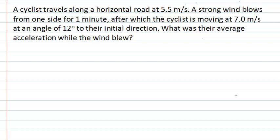Now, what is the actual thing that you're asked to calculate here? In this example it's quite simple. The very last sentence is a straightforward question — it asks what was the average acceleration of this object while the wind was blowing. So we're going to have to calculate an average acceleration, and we need to realize from the start that's going to be a vector quantity: the average acceleration will require a magnitude and a direction.